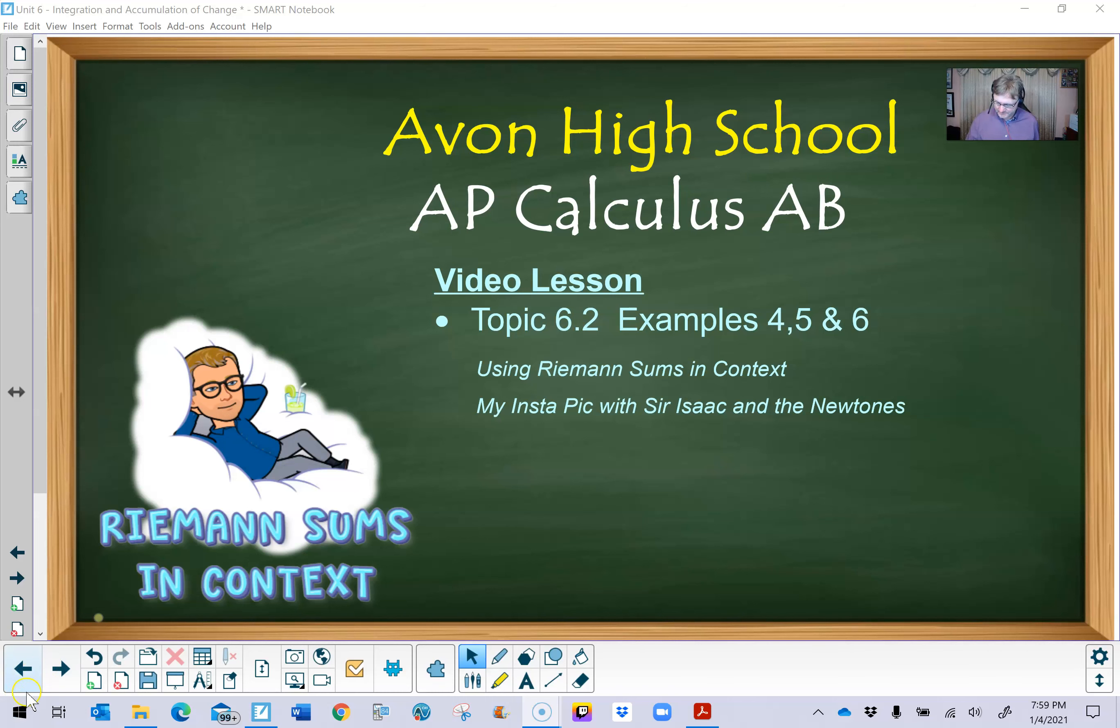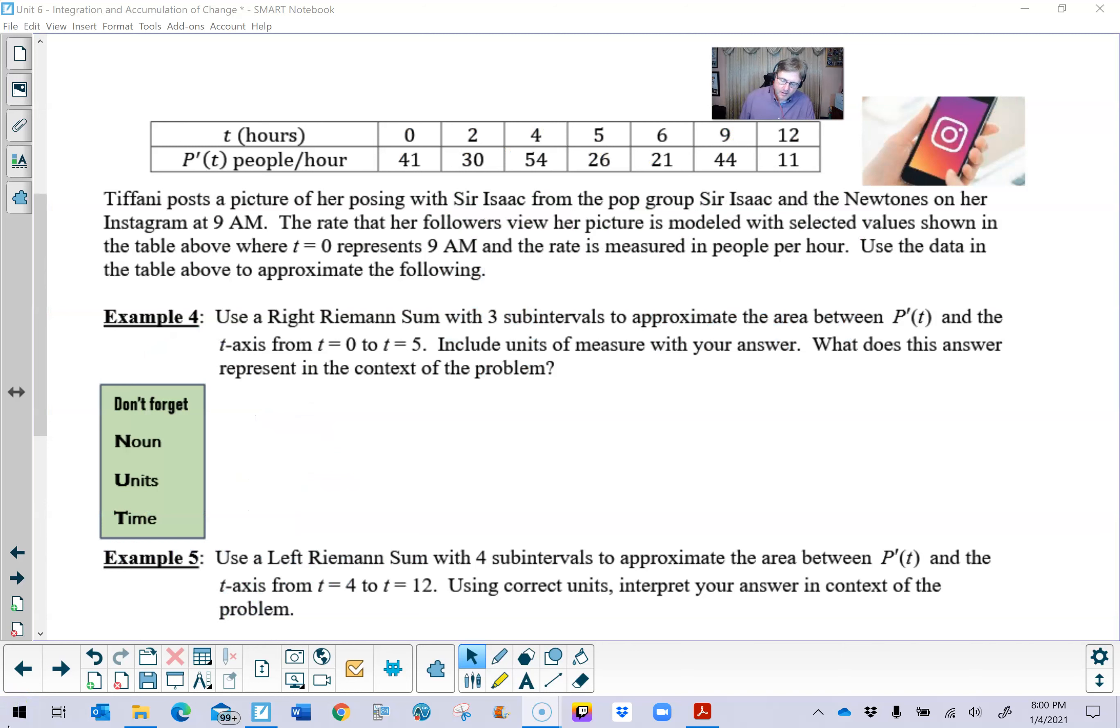So let's take a look at example four. So here we are. What we have is a table of values that we're going to interpret here in a little bit. And the stem of the problem reads, Tiffany posts a picture of her posing with Sir Isaac from the pop group Sir Isaac and the Newtones on her Instagram at 9 a.m. The rate that her followers view her picture is modeled with selected values shown in that table above, where time equals zero, t equals zero represents 9 a.m., and the rate is measured in people per hour.